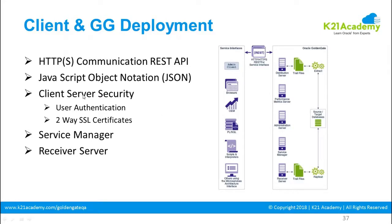Communication happens using REST APIs with JSON (JavaScript Object Notation) — this is all internal. Security has also been made more robust: user authentication is available along with SSL certificates. Clients and organizations are increasingly concerned about data security, and this has been addressed in the microservices architecture.